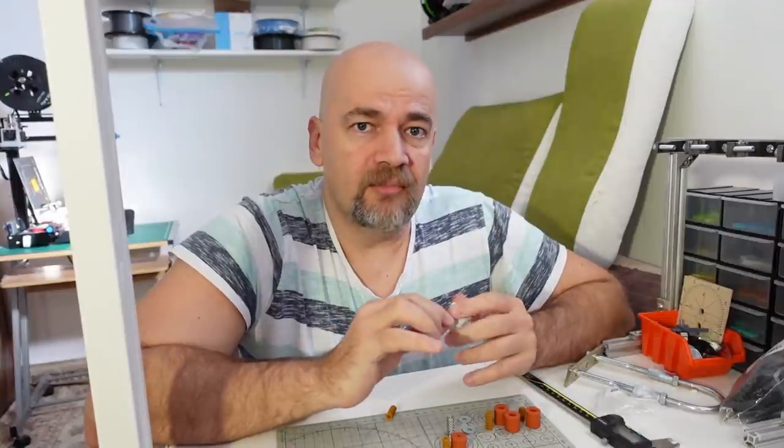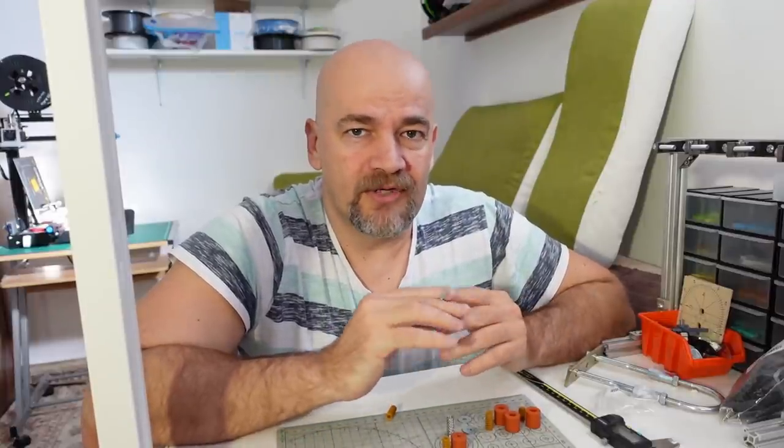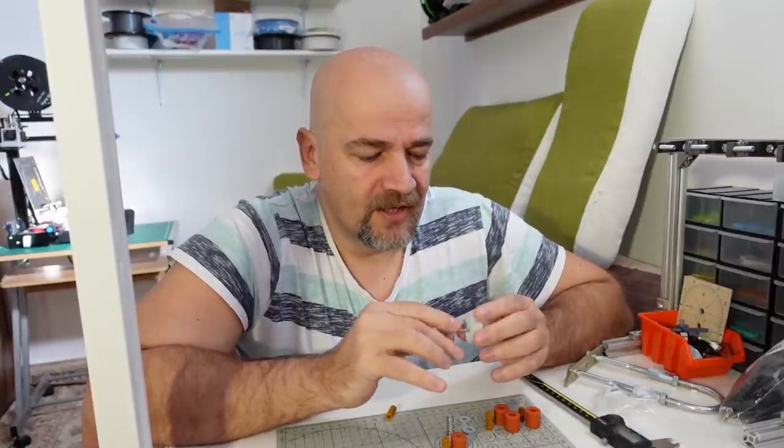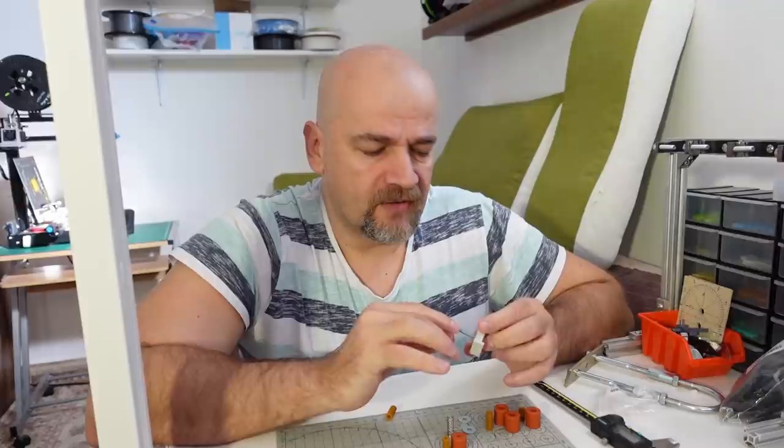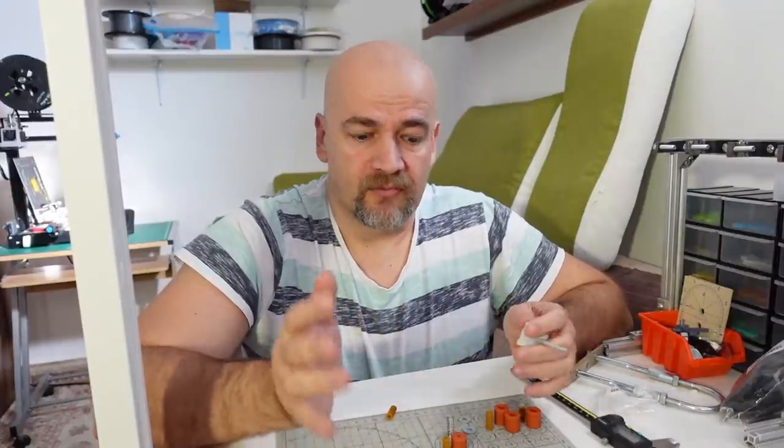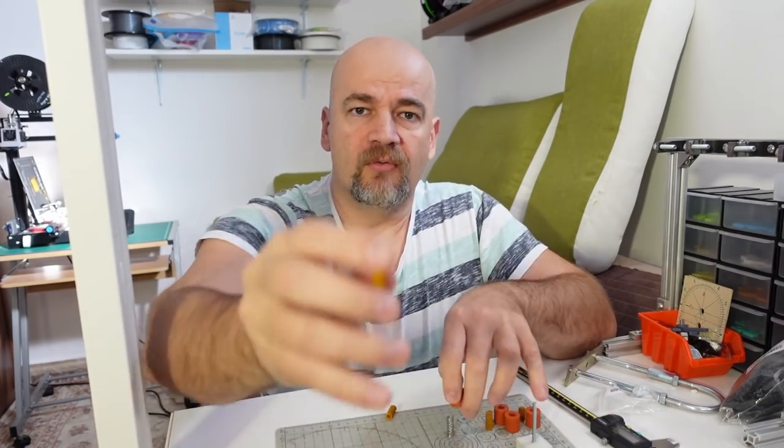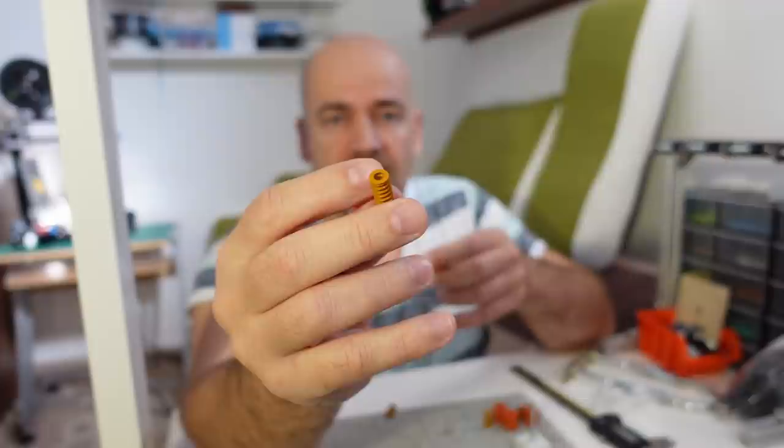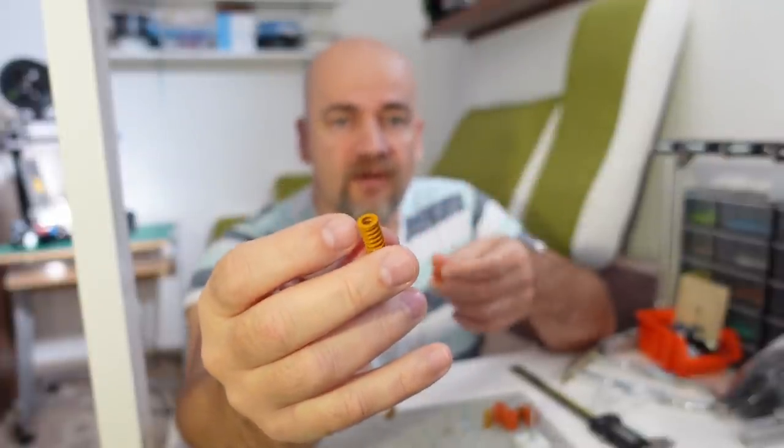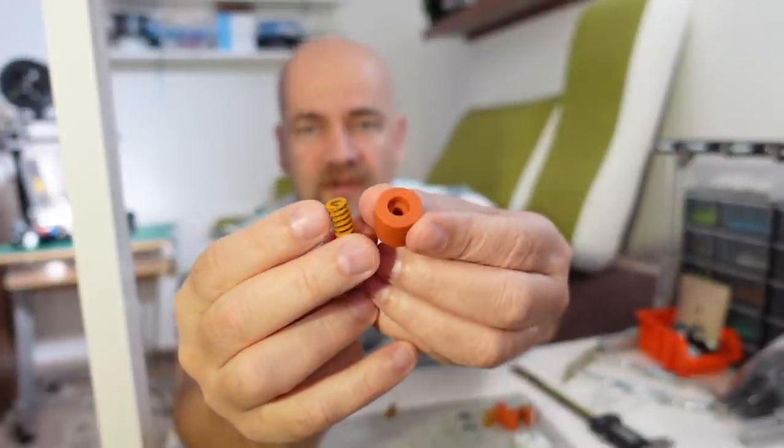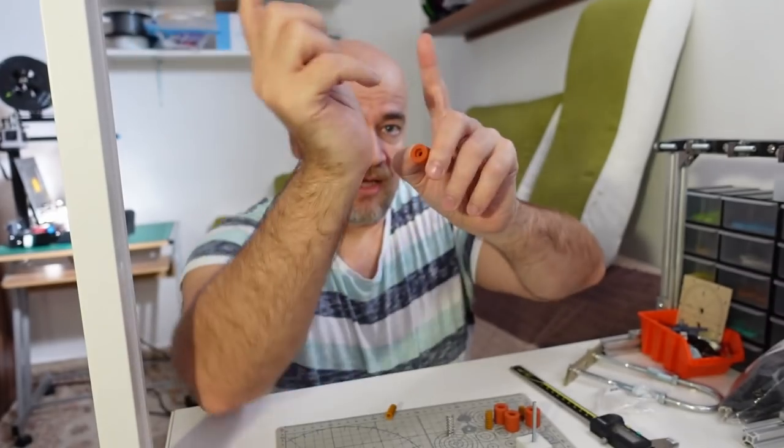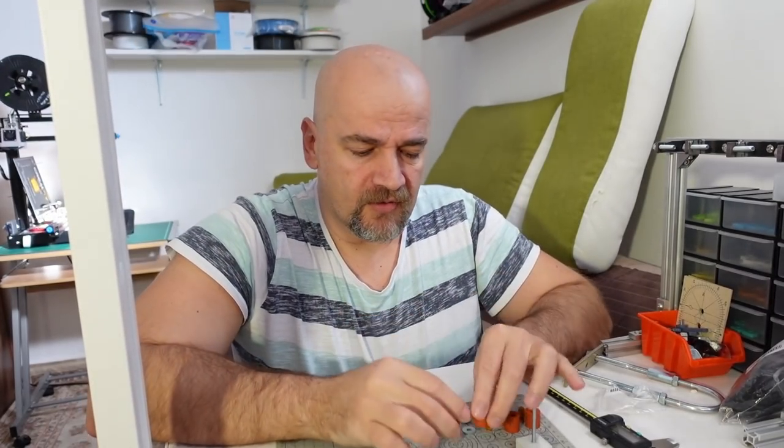Before I scare anybody with my mechanical theories, here is the short version: if you're using the Z limit switch and you're an average user, go with these yellow springs. If you want to install the auto-leveling sensor, I believe that silicon columns are better, but I will test it in this video.